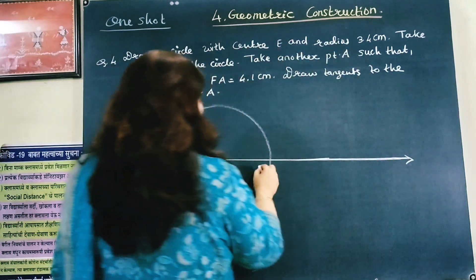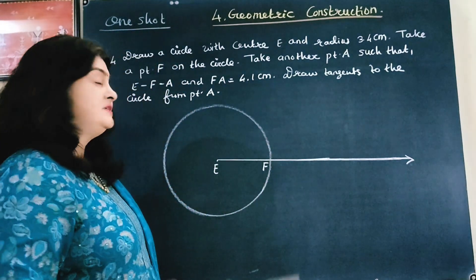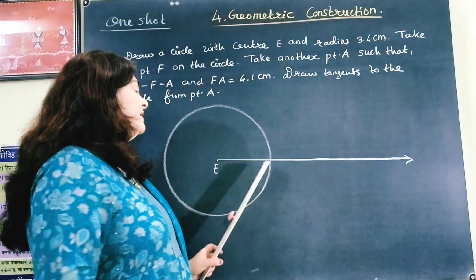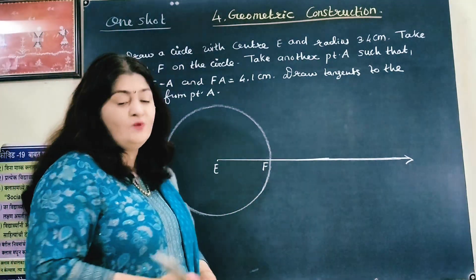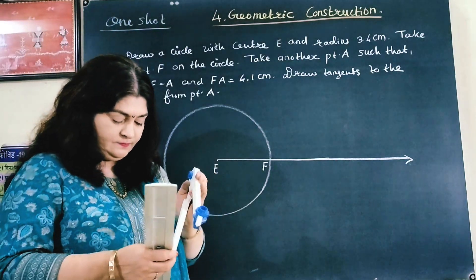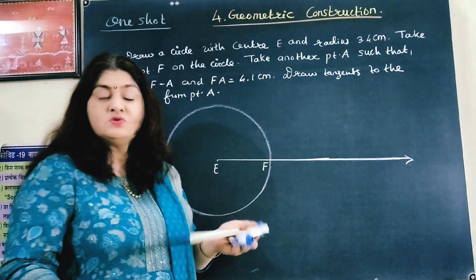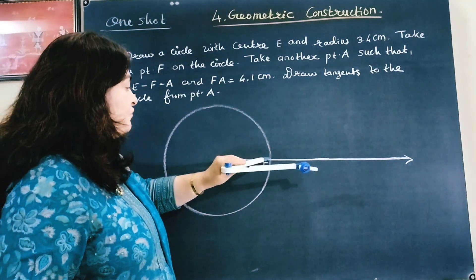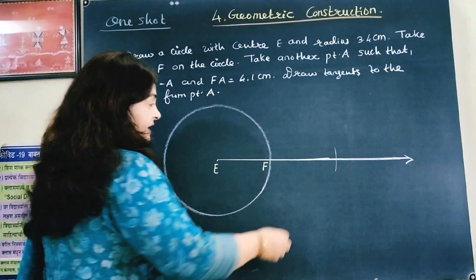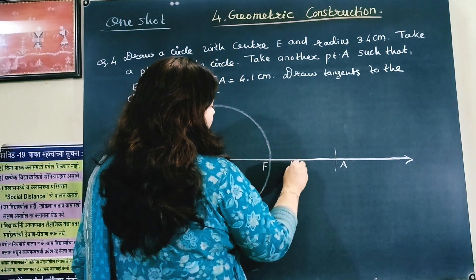This is point F on the circle. From point F, I have to take point A such that E-F-A are collinear. A will be somewhere further along the ray. FA is 4.1 cm, so let us take 4.1 on compass. This is 4.1 — from F I will make an arc and this is my point A. The distance FA is 4.1 cm, and the radius EF is 3.4 cm.